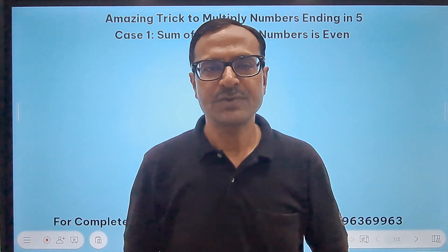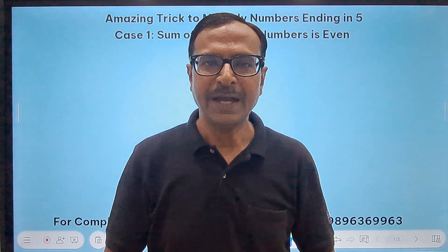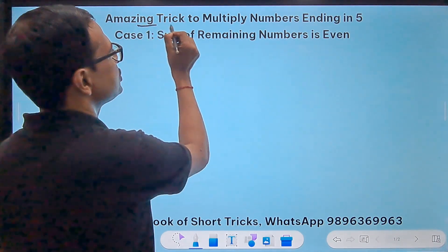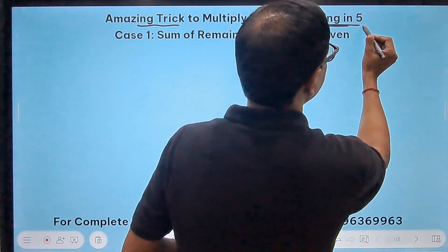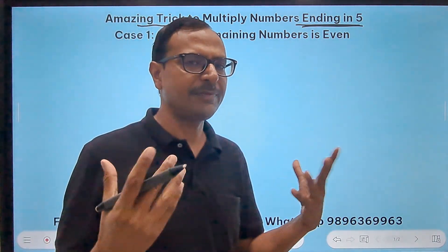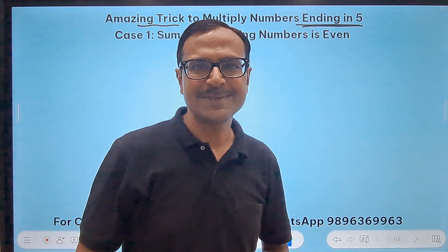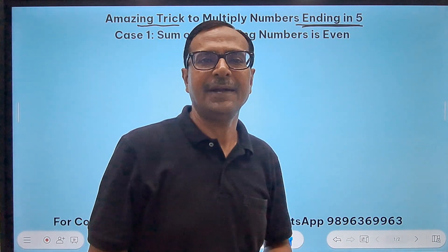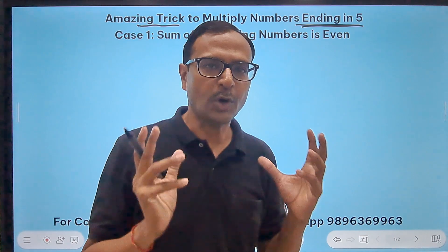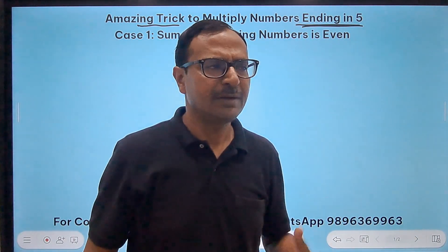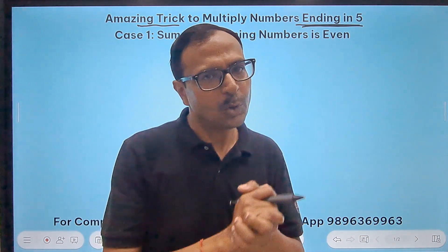Another trick to multiply numbers very quickly, and this time I am going to take numbers which end in 5. They can be 2-digit numbers, 3-digit numbers, 4-digit, 5-digit, even 10-digit numbers ending in 5. You will see how the shortcut will enable you to find the answer without pen and paper within say 7-8 seconds only.